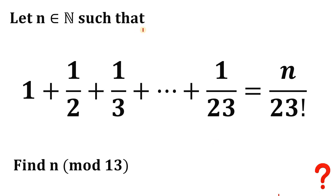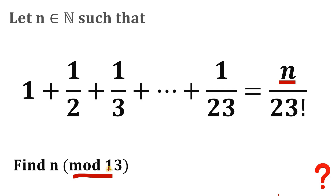Let n be a natural number such that 1 plus 1/2 plus 1/3 plus all the way down to 1/23 equals n over 23 factorial. We want to find the remainder when n is divided by 13, or n mod 13. Pause the video and see if you can answer this question.